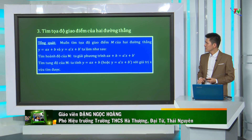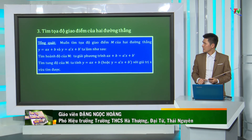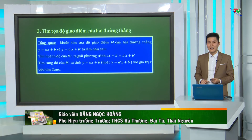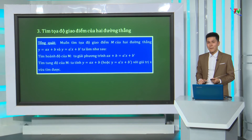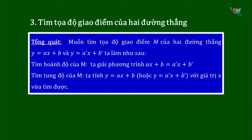Như vậy, thầy vừa hướng dẫn các em dạng bài toán tìm tọa độ giao điểm của 2 đường thẳng. Một cách tổng quát, muốn tìm tọa độ giao điểm của 2 đường thẳng Y bằng Ax cộng B và Y bằng A'x cộng B', ta làm như sau: tìm hoành độ của M bằng cách giải phương trình Ax cộng B bằng A'x cộng B'; tìm tung độ của M bằng cách tính Y bằng Ax cộng B hoặc Y bằng A'x cộng B' với giá trị x vừa tìm được.